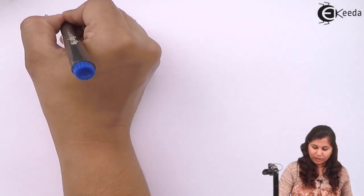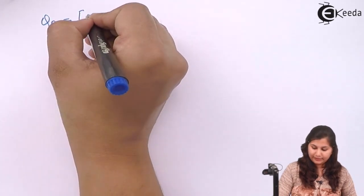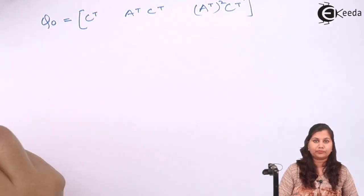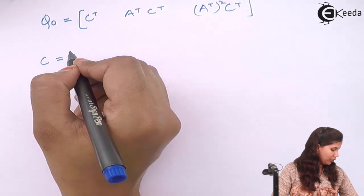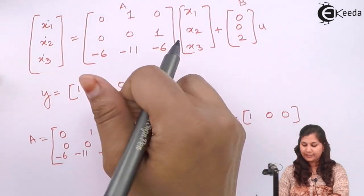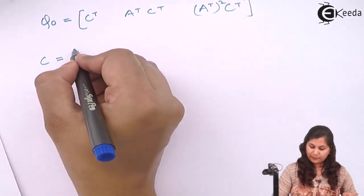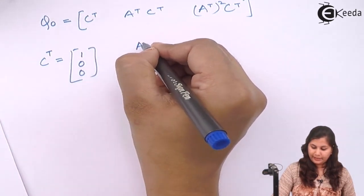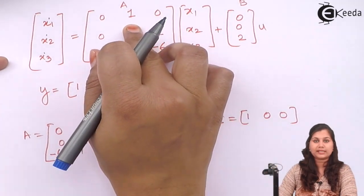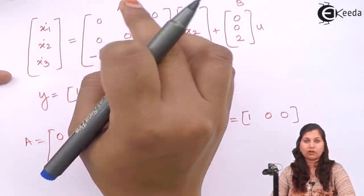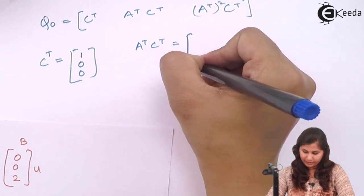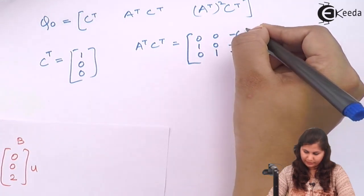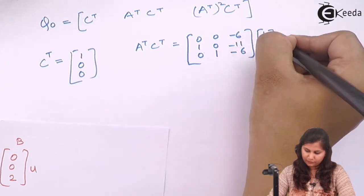Now we check observability. For observability we check the rank of the observability matrix Q0 = [C^T, A^T·C^T, (A^T)²·C^T]. The C matrix from the state model is [1, 0, 0], so C^T = [1, 0, 0]^T. The transpose of A is A^T = [[0,0,−6],[1,0,−11],[0,1,−6]].